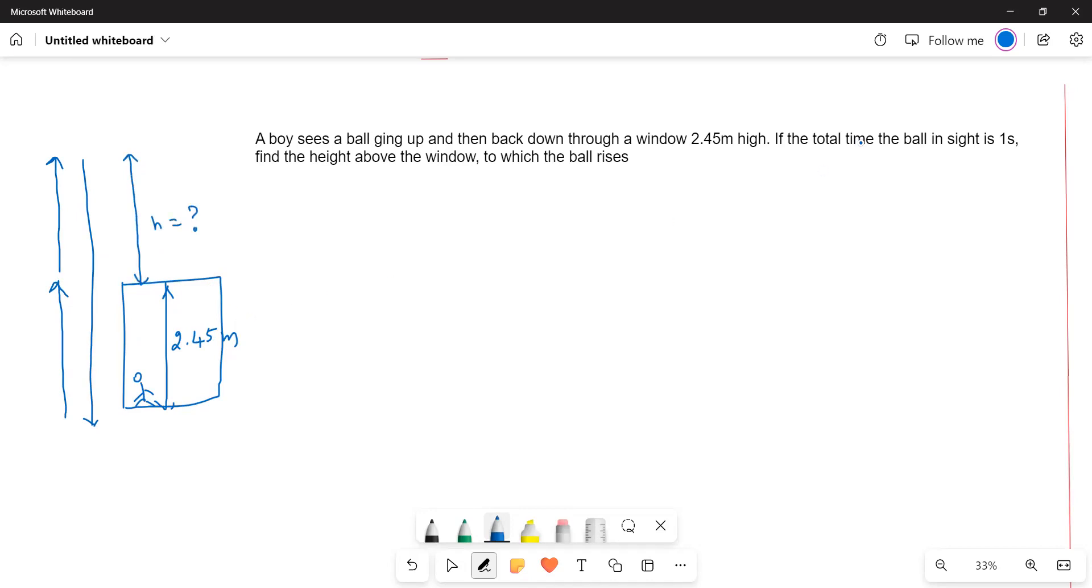What he is saying is that if the total time the ball in sight is 1 second, the boy sees this time interval. That means going here and then coming back. This time interval is 1 second, the time interval is 1 second.